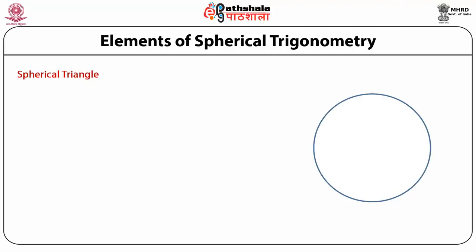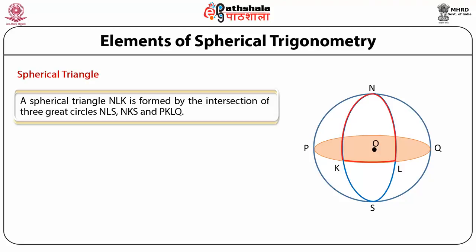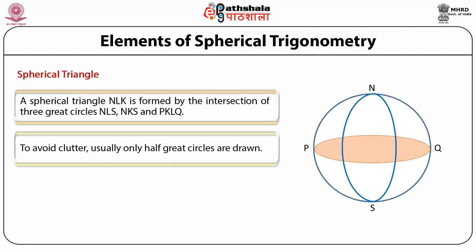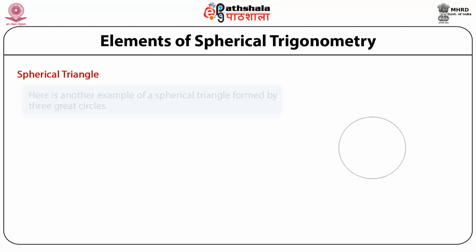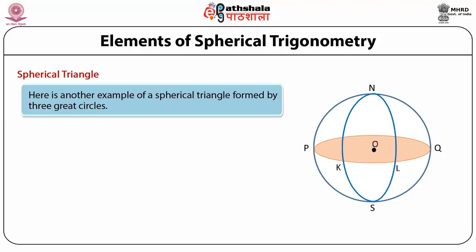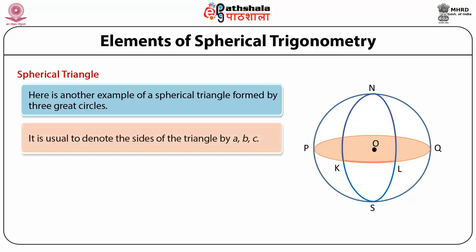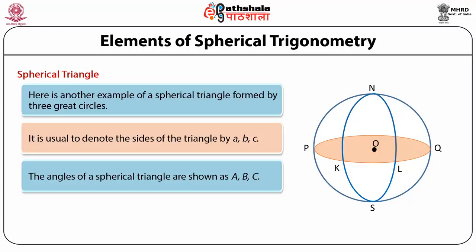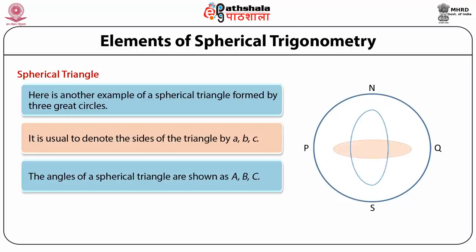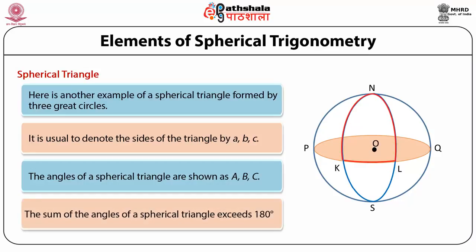Now let us define a spherical triangle. A spherical triangle NKL is formed by the intersection of three great circles: NLS, NKS, and PLQ. These three great circles form a spherical triangle KNL. The spherical triangle has sides denoted by small letters a, b, c and angles denoted by capital letters A, B, C. We are all familiar with triangles in the plane where the sum of angles equals 180 degrees. But in a spherical triangle, the sum of all three angles is greater than 180 degrees.